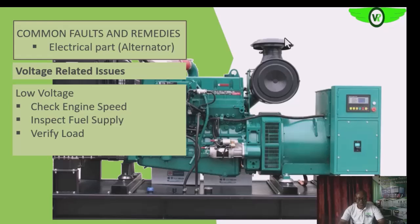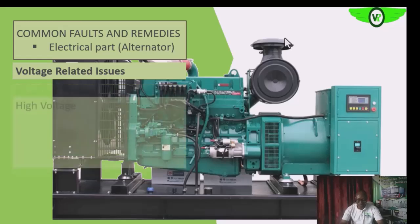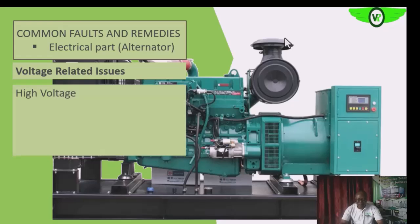Overloading too can cause low voltage — if there are more loads than the system is designed for, it will drag the engine and the voltage will drop. Check that the load is normal. The excitation system can also cause low voltage: if the voltage from the AVR is low, the magnetic field at the exciter field will be low, the exciter armature output will be low, what is rectified will be low, and thus what is induced into the main armature will also be low.